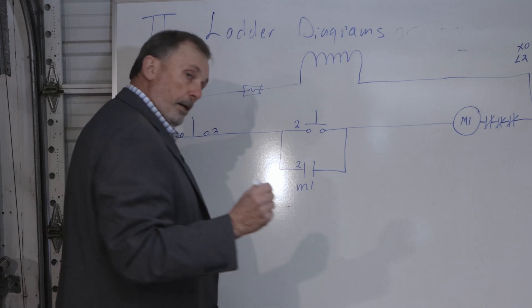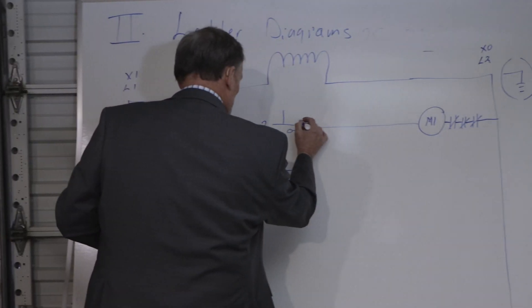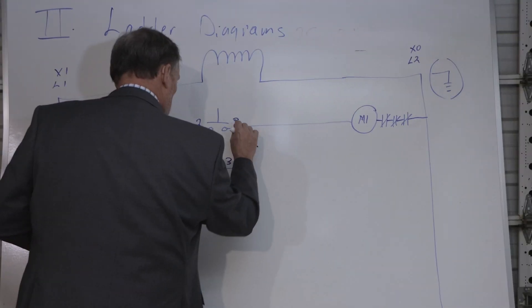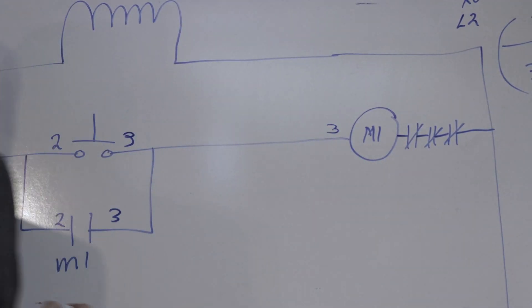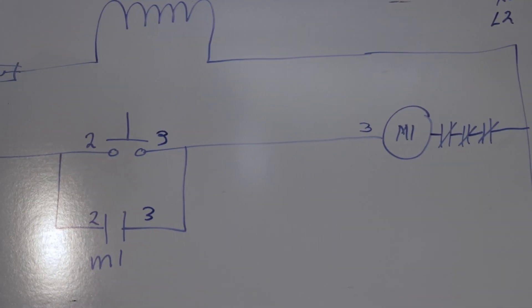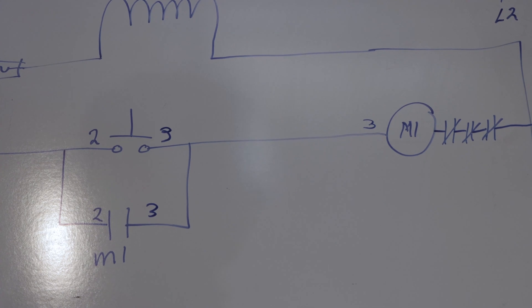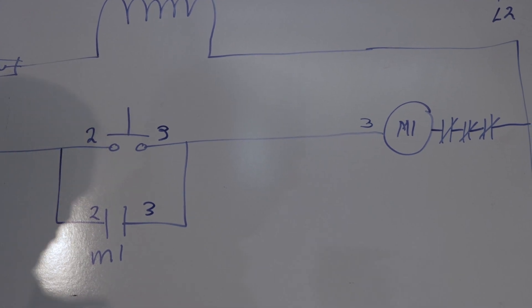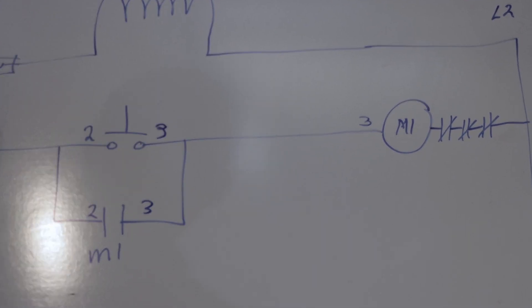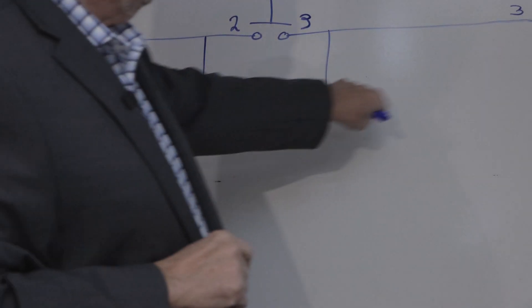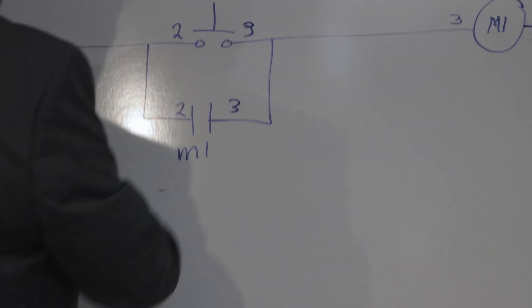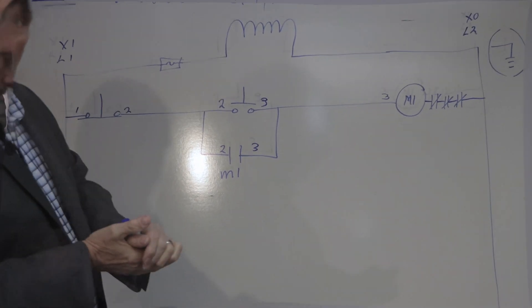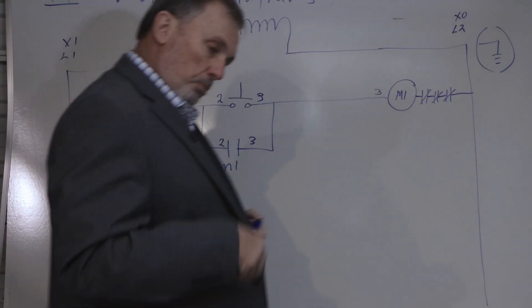Anybody going to the head of the class would see this being number three, and this being number three, and this being number three. On most starters you're going to see a number two and a number three designated — that's the set of auxiliary contacts built right into the starter, and they're going to close when the starter engages.